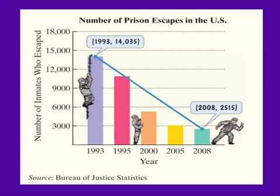When we look at the graph, we note that we have some values given to us. For instance, in the year 1993, we're given the value of 14,035, the number of inmates who escaped. In the year 2008, we're given the value of 2,515. We can see there was a big decrease.